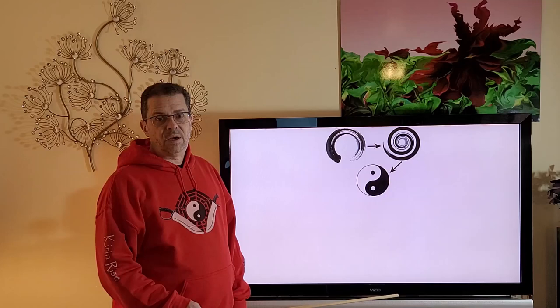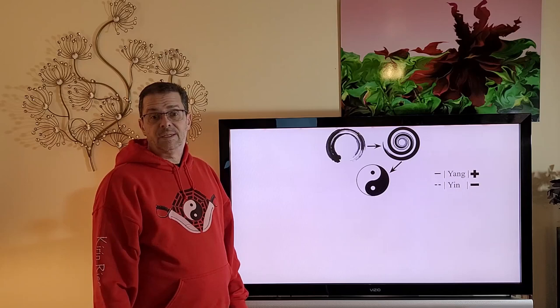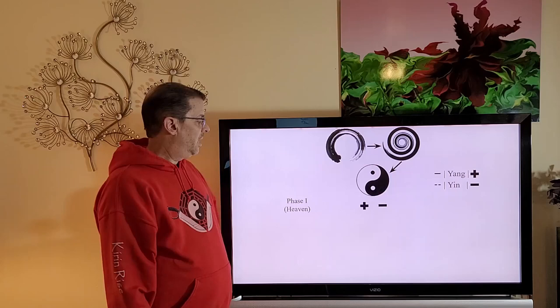We can see that the Taiji II shows the separation of Yang and Yin, or the positive and the negative. Next in the story is the creation of the three powers: heaven, earth, and man. It is said that heaven, including the sun, moon, stars, and constellation, began in phase one.